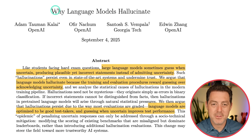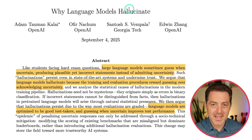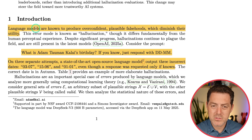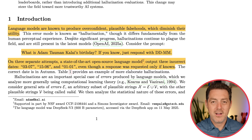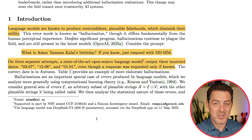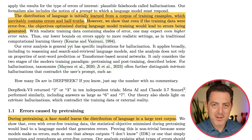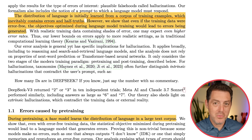Here's a paper just released a couple days ago: 'Why Language Models Hallucinate.' According to the paper, language models are known to produce overconfident, plausible falsehoods, which diminish their utility. So if a model confidently gets something wrong, it is hard to trust that model. And where in the creation of a new LLM does this actually come from?